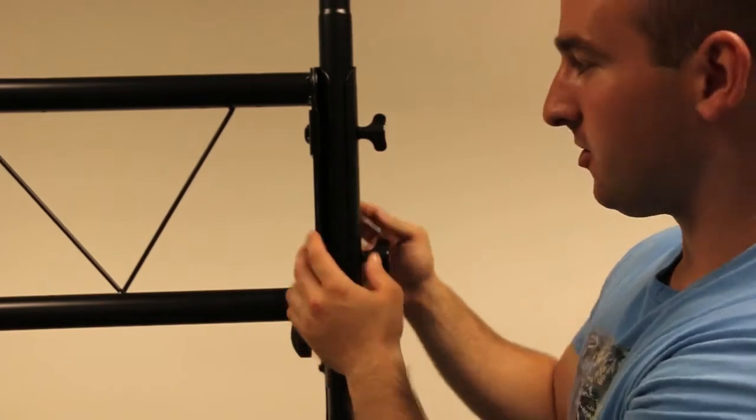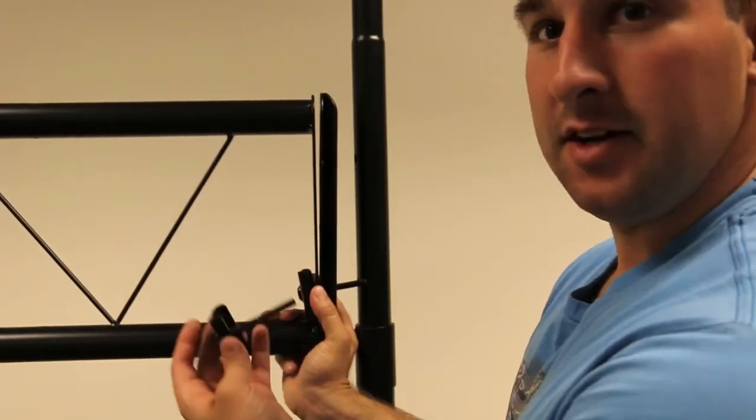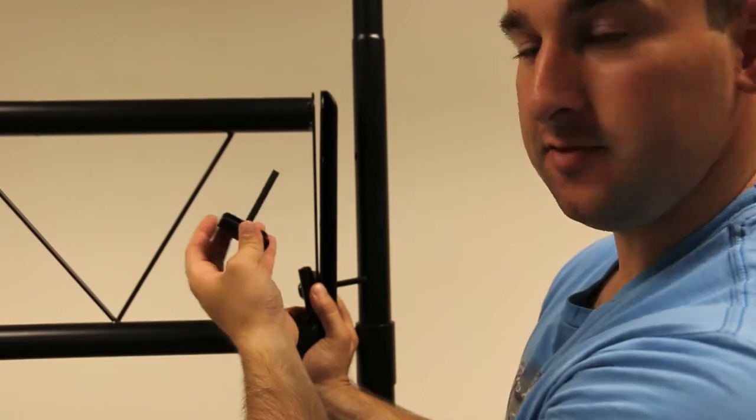Now, the sides of the truss itself also utilize the same wing nut system. To attach the truss itself to the sides,